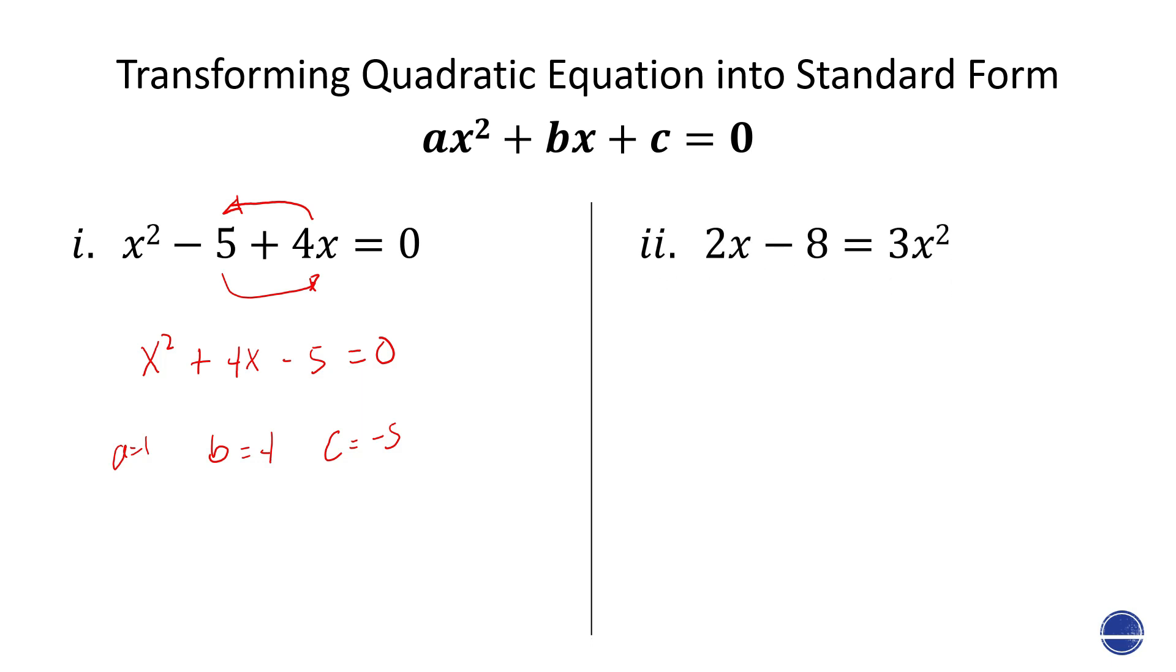Let's answer the second one. 2x minus 8 equals 3x squared. There are two terms on the left, one term on the right side, so it's easier to move that one term on the right to the left. So this is negative 3x squared plus 2x minus 8 equals 0.